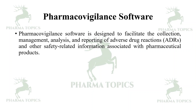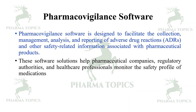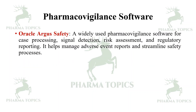Pharmacovigilance software is designed to facilitate the collection, management, analysis, and reporting of adverse events and other safety-related information associated with pharmaceutical products. These software solutions help pharmaceutical companies, regulatory authorities, and healthcare professionals monitor the safety of medications. One widely used option is Oracle Argus Safety, used for case processing, signal detection, risk assessment, and regulatory reporting — helping manage AE reports and streamline safety processes.